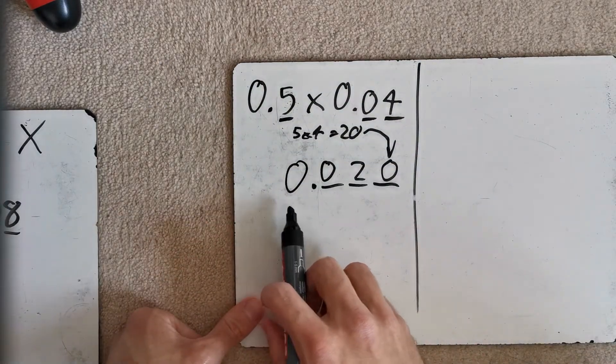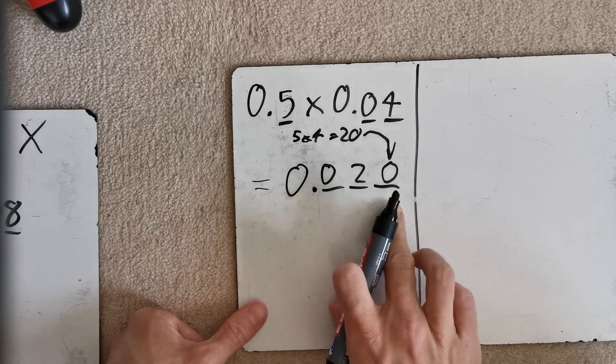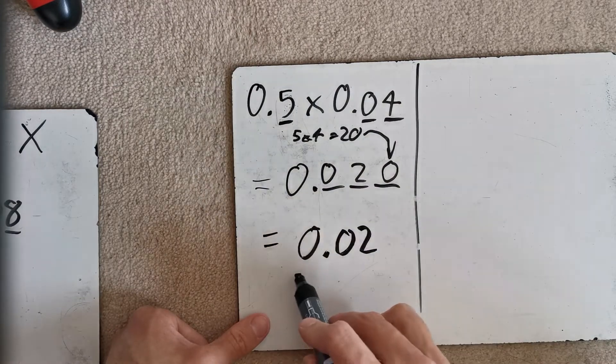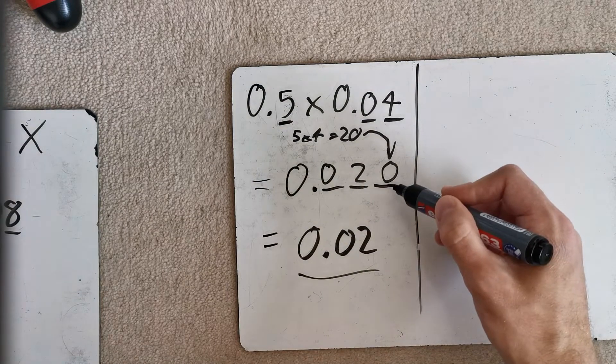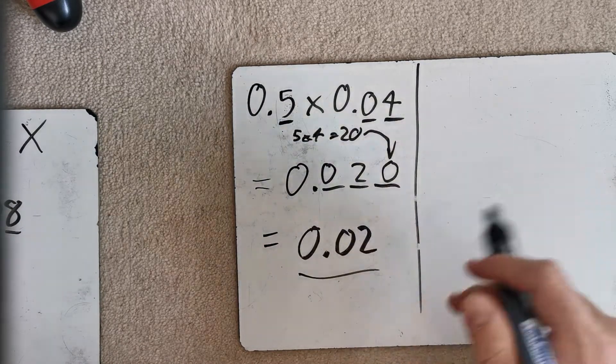Okay, so this becomes, so the answer is 0.020. Do we need that 0 at the end? Not really. 0.02 can be our final answer. Now, that in a GCSE would still be accepted, but this one is the neater version, really. Okay.